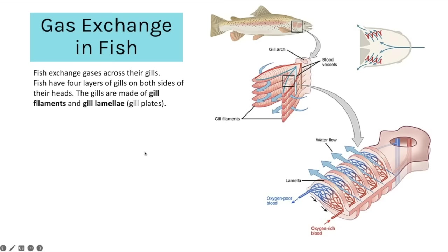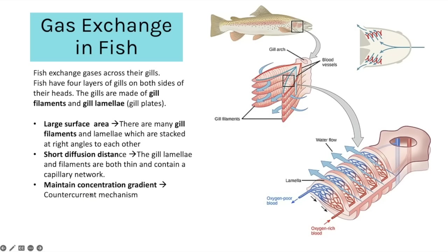Gas exchange in fish happens over the gills — there are four layers of gills on both sides of their heads. The gills are made up of gill filaments, and every gill filament is covered in gill lamellae, which are the site of gas exchange. The large surface area comes from the many gill filaments all covered in gill lamellae. The short diffusion distance is because the gill lamellae and filaments are very thin and the gill lamellae contain a network of capillaries.